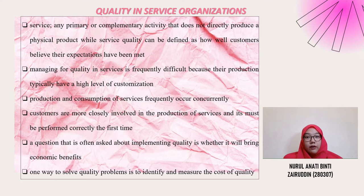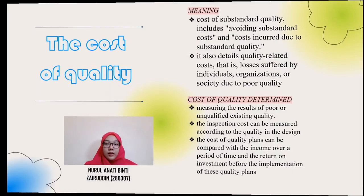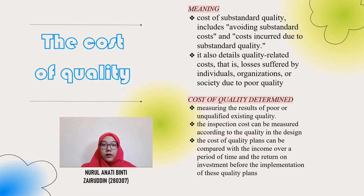However, the proportion of higher education institutions participating in long-term initiatives to measure and improve quality has seemed relatively low. A question often asked is whether quality implementation provides economic benefits. One way to solve the quality problem is to identify and measure quality costs. The cost of quality is also called the cost of inferior or substandard quality, including the avoidance of inferior quality costs and costs incurred due to inferior quality. It also specifies the cost associated with quality — the losses suffered by individuals, organizations, or society due to poor quality.